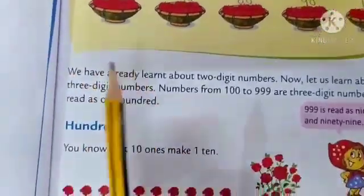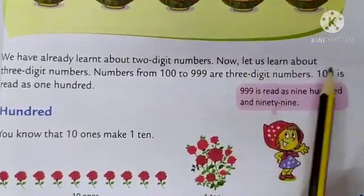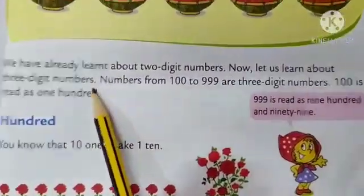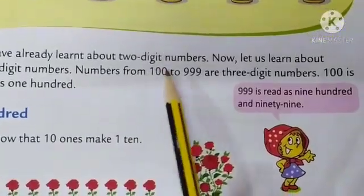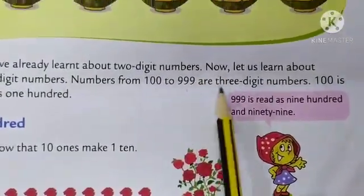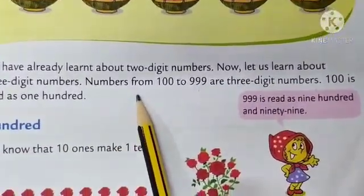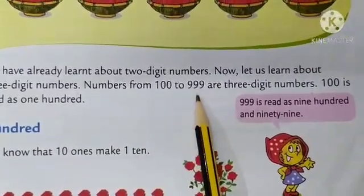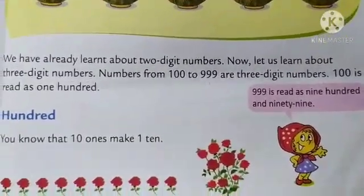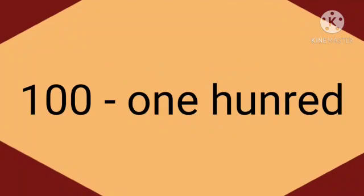Now, we have already learned about 2 digit numbers. Now, let us learn about 3 digit numbers. So, numbers from 100 to 999 are 3 digit numbers. That is, numbers from 100 to 999. So, the 3 digit number starts from 100. And, we always read this as 100.